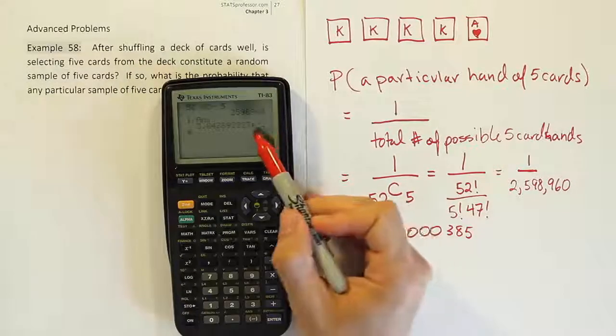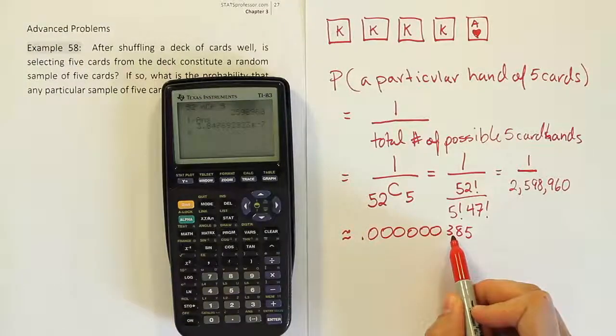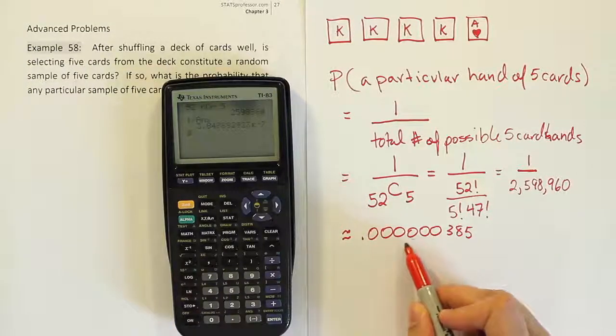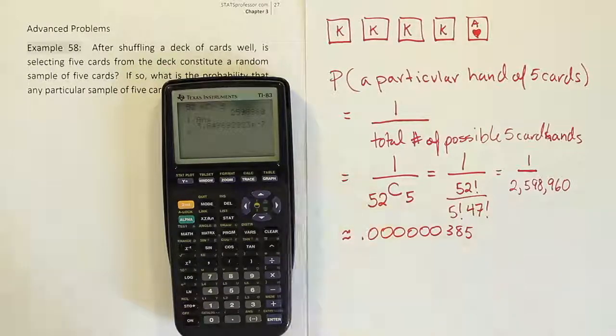And the answer is 385. The reason why it's six zeros is because that's like times 10 to the negative seven. So if the decimal place was here, we'd go one, two, three, four, five, six, seven. And there's where we get the six zeros. So this is extremely small.